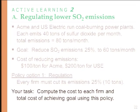Each firm is required to reduce emissions by 10 tons. Acme incurs a cost of $1,000, Use incurs a cost of $2,000, and the total cost is $3,000. Now the second learning example is where the real content is — let's look at tradable pollution permits.